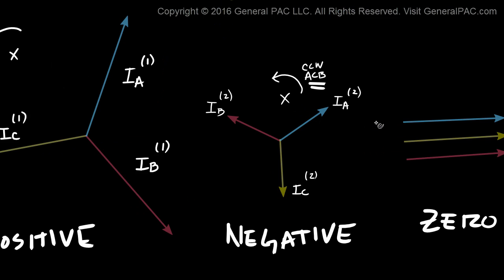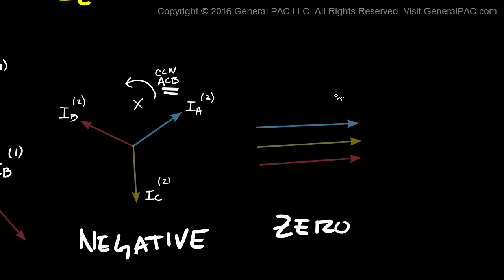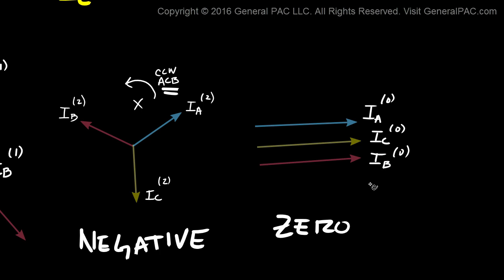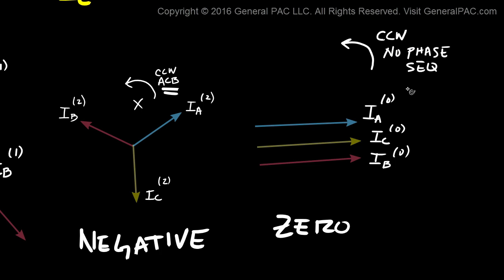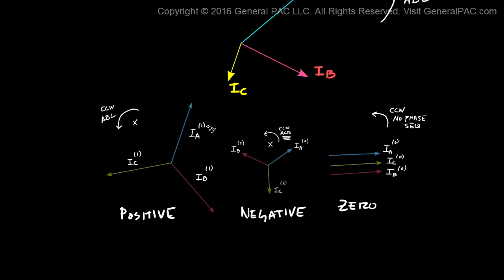Now we get to our Zero Sequence Component — let's zoom in here. This is IA superscript 0. This right here is IC superscript 0. And this phase here is IB superscript 0. The Zero Sequence Component is also rotating in the counterclockwise direction, but in terms of phase sequence or phase rotation, it has no phase sequence — meaning it's neither A, B, C nor A, C, B. In reality, these Zero Sequence Components actually overlap each other, but to make them easier to see, we've displaced them slightly.